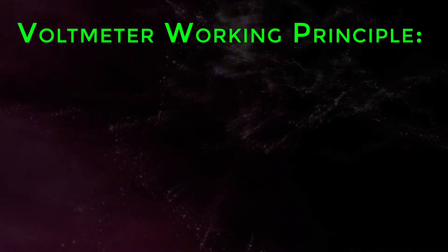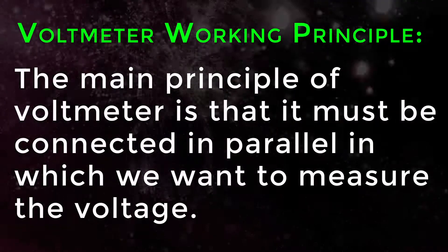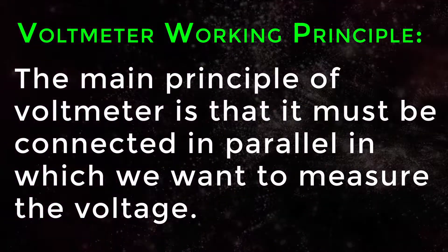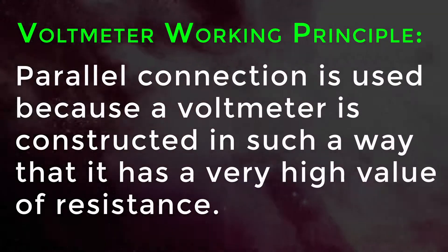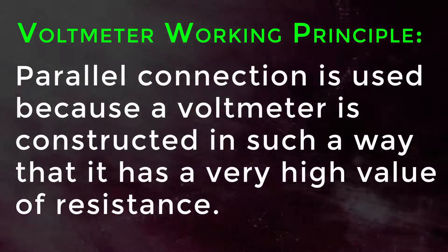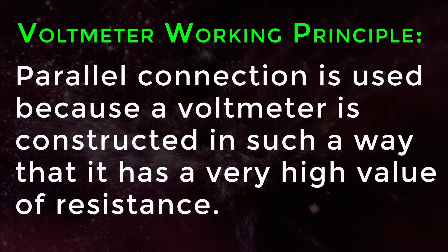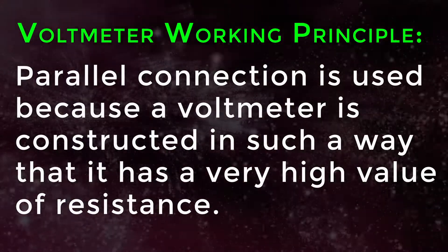Voltmeter working principle. The main principle of a voltmeter is that it must be connected in parallel in which we want to measure the voltage. Parallel connection is used because a voltmeter is constructed in such a way that it has a very high value of resistance.